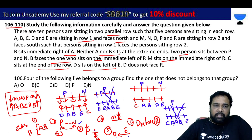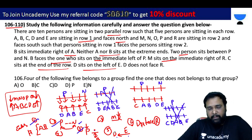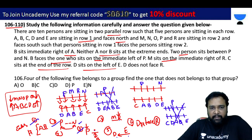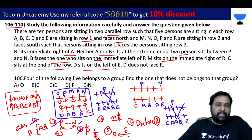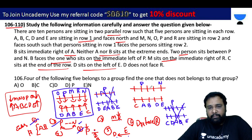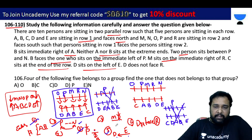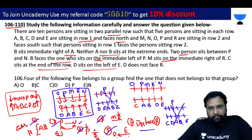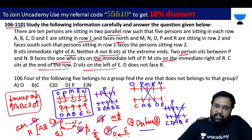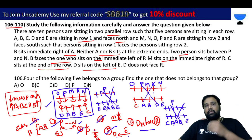Moving to the next sub-case. R and M, N, O are placed. One arrangement is valid. Checking the condition D does not face R — one case is eliminated because D faces R in that configuration. So only one valid arrangement remains.